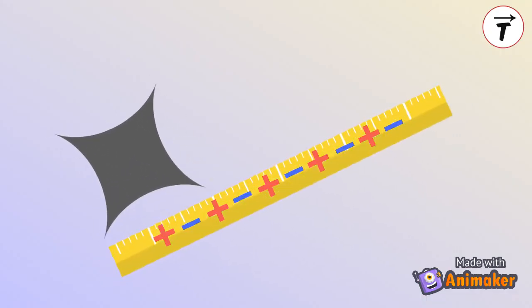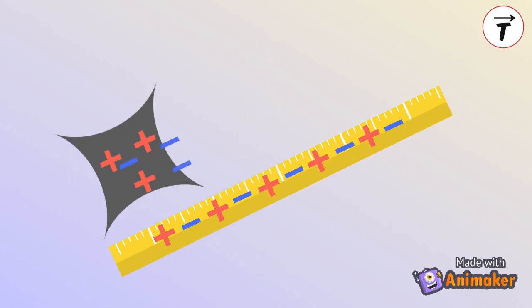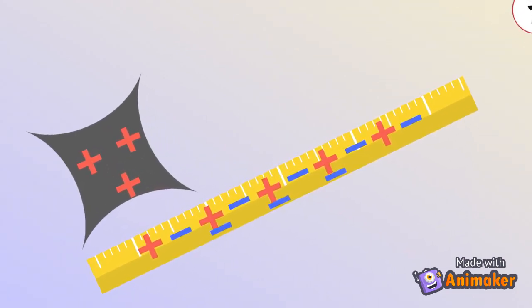Consider a neutral plastic ruler and a piece of cloth. In both the ruler and the cloth, the number of protons equals the number of electrons. Rub the plastic ruler with the cloth. Due to friction, some electrons are transferred from the piece of cloth to the plastic ruler.